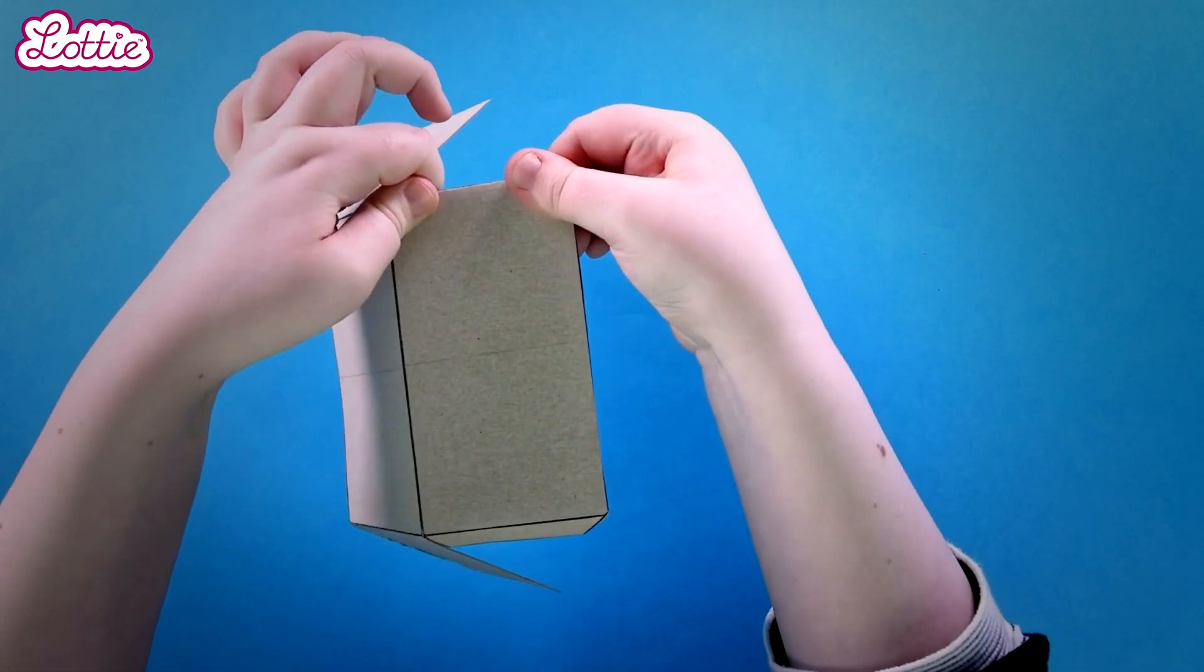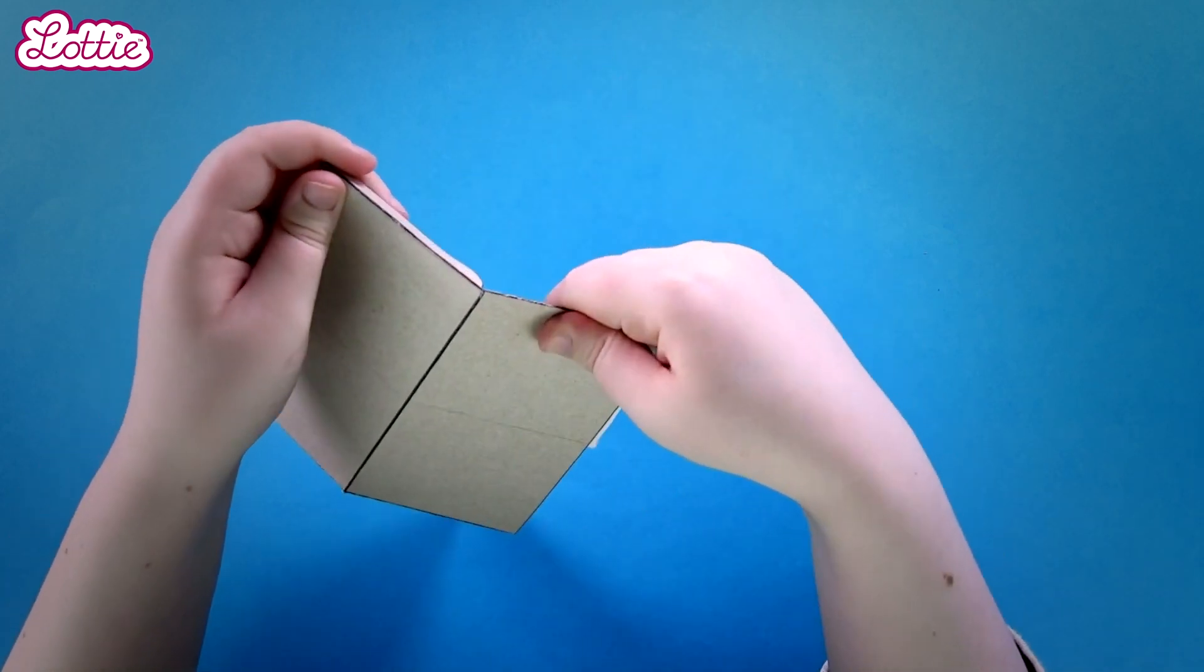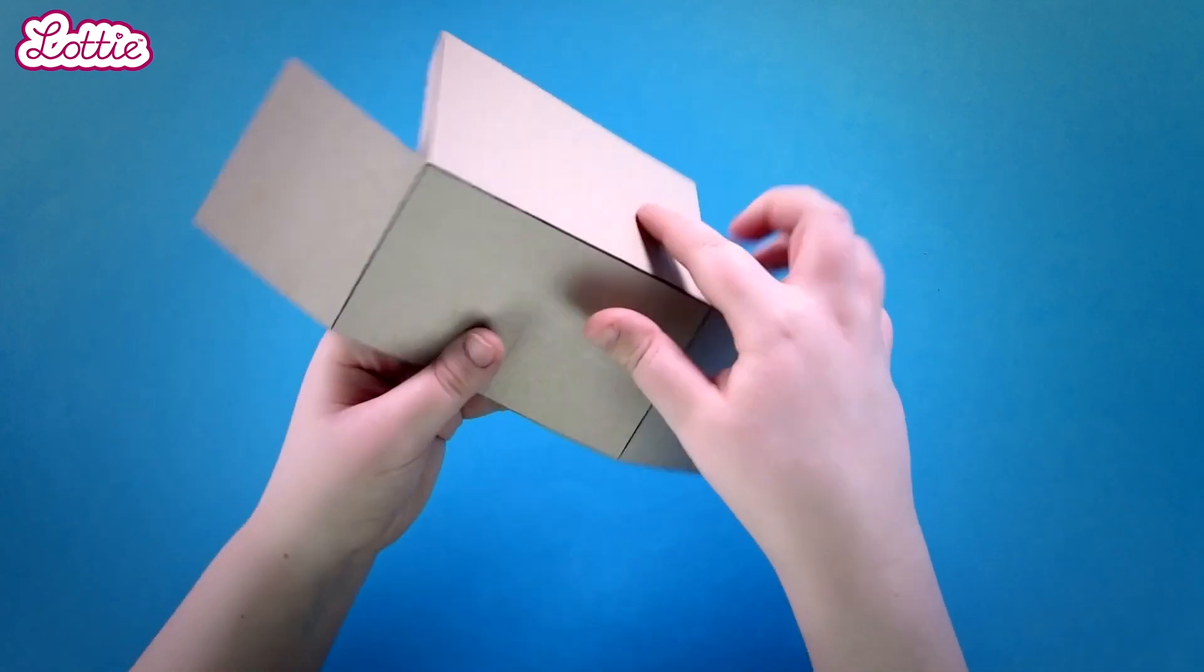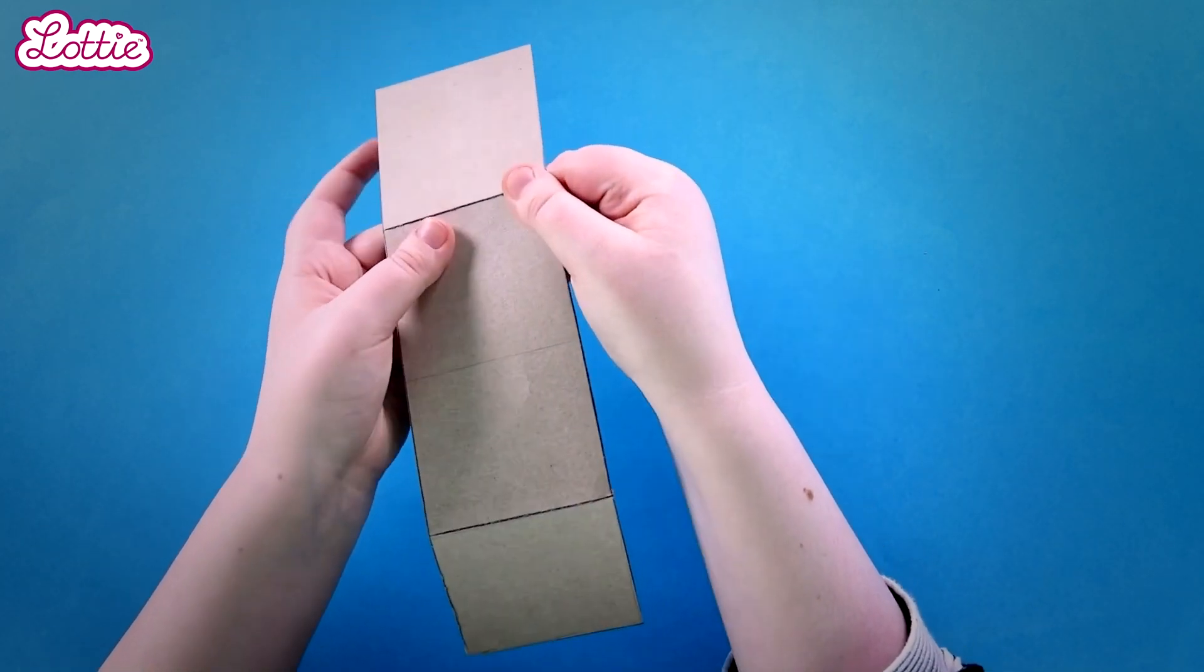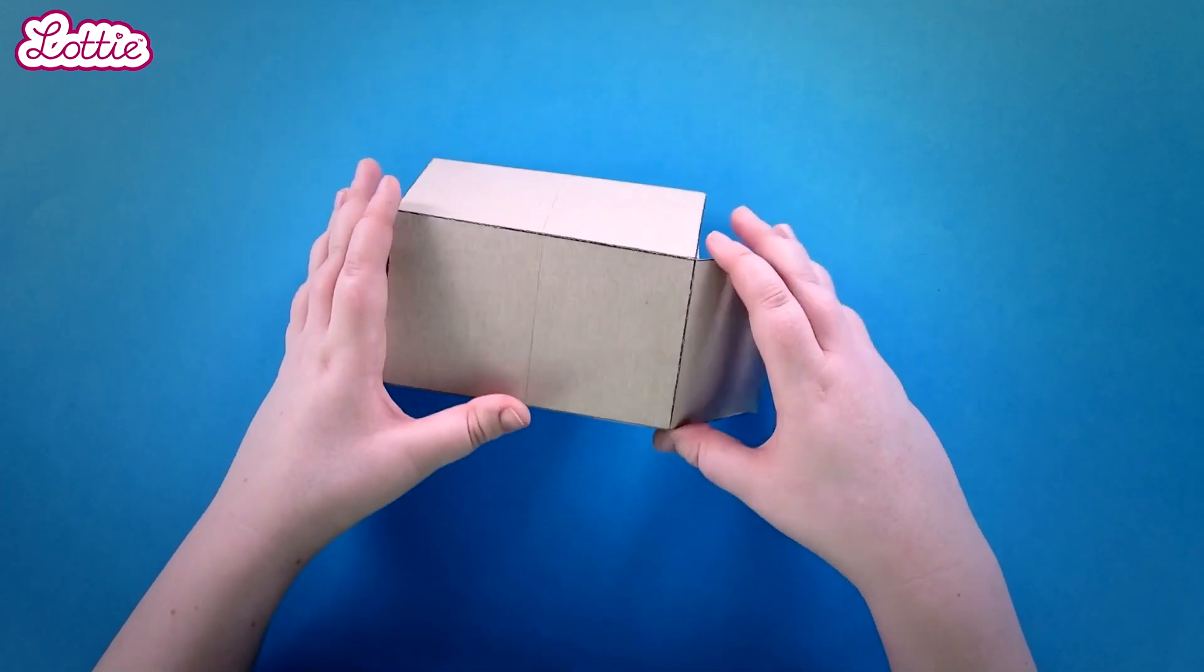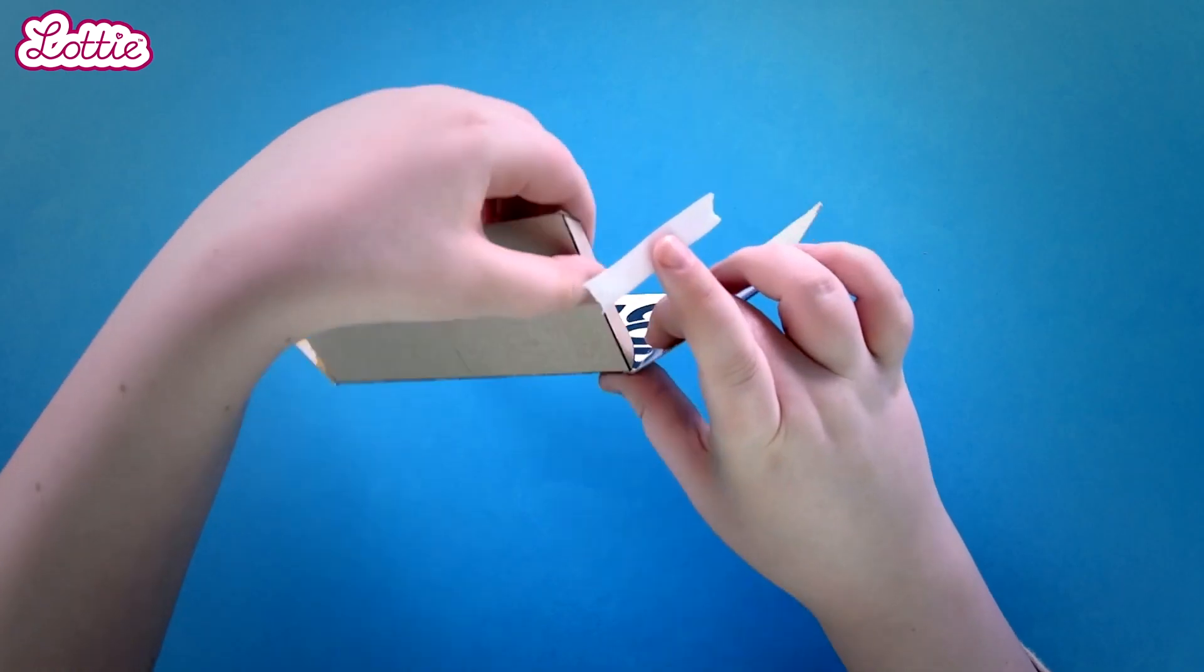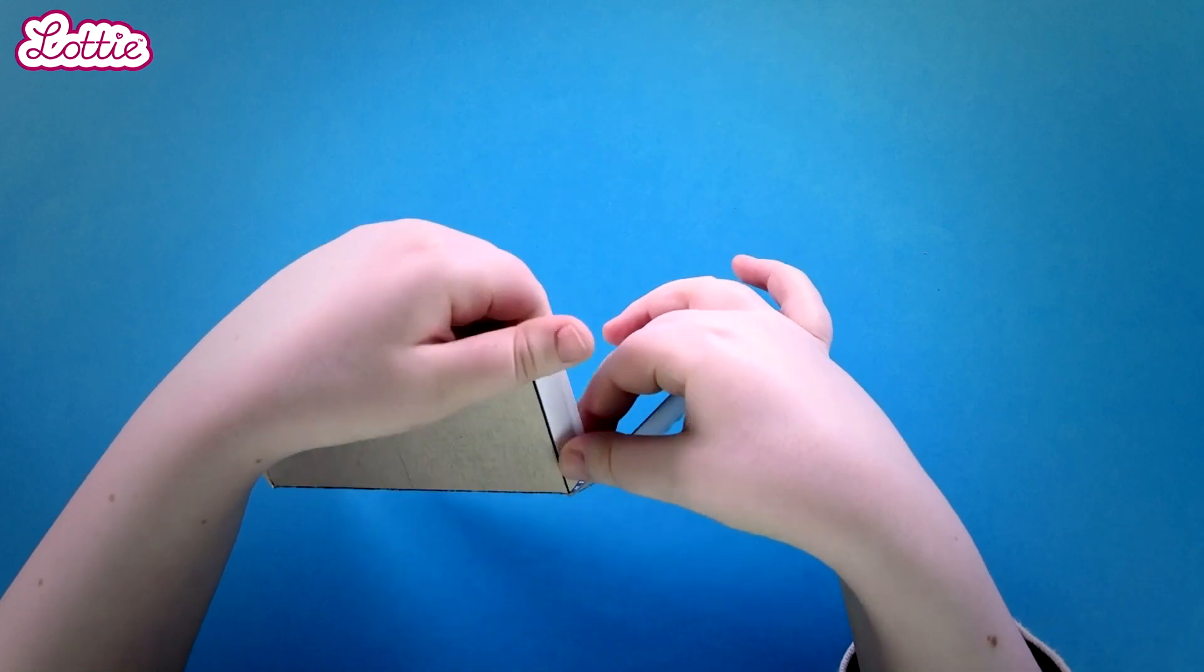Crease them with your fingers to get a nice fold. Now grab the double-sided tape and add it to the little pieces, just like this.